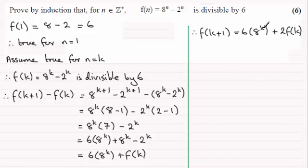And what I notice now is that this term has got a factor of 6 in, so it must be divisible by 6. And we know that f(k) is divisible by 6. We've got it down here. And so 2 lots of f(k) must be divisible by 6. So both terms are divisible by 6. So it must mean that f(k+1) must be divisible by 6.